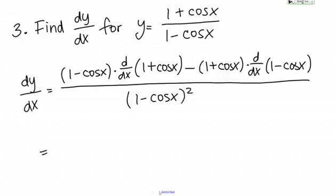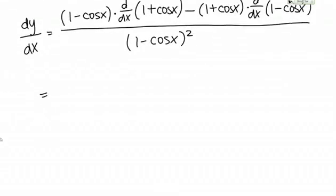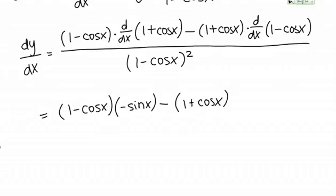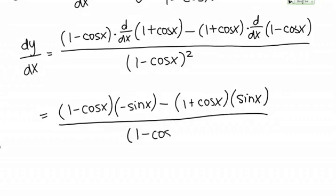Now taking the derivatives: the derivative of (1 plus cosine x) — the derivative of 1 is 0, so I'm left with the derivative of cosine x, which is negative sine x. Then minus (1 plus cosine x) times the derivative of (1 minus cosine x) — the derivative of 1 is 0, and the derivative of negative cosine x gives a minus negative sine, so a double negative gives positive sine x. All over (1 minus cosine x) squared.